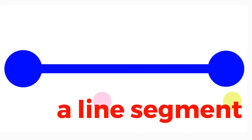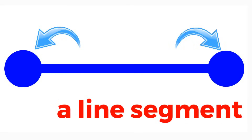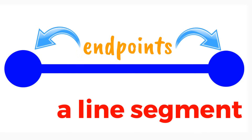A line segment is so different. It has these two dots, one on each end. These dots are endpoints. It doesn't keep going and going — it starts at one point and then ends at another. This is a line segment.